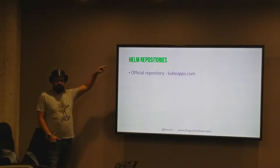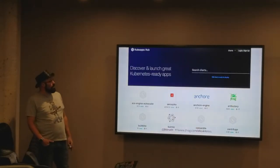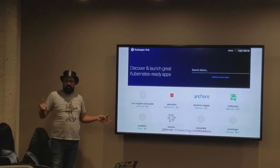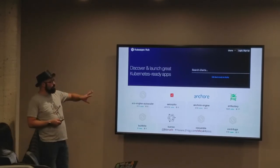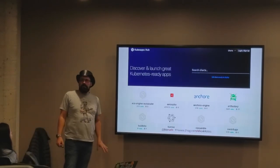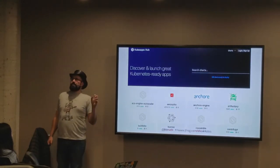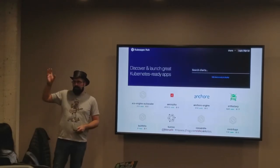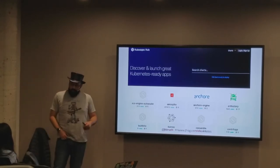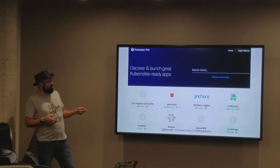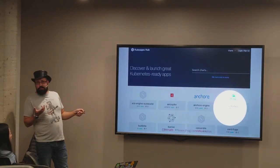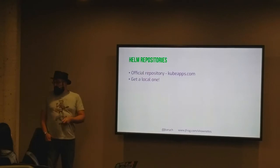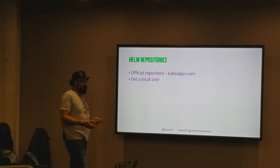The official central Helm repository is kubernetesapps.com, a service provided by Bitnami, who are major contributors in the Kubernetes ecosystem. In the Helm GitHub repository there are about 600 charts - some incubating, some released. But you really need a local repository - true for any dependency manager, and true for Kubernetes too. First, you want to cache and proxy kubernetesapps.com because you never know if it will be there tomorrow.